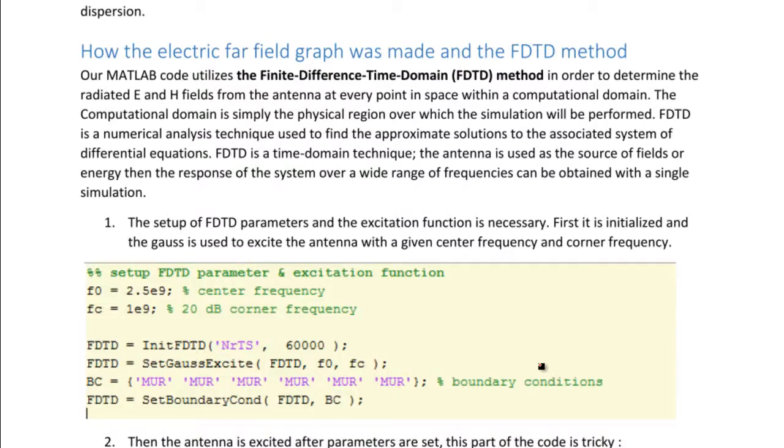I'm going to talk about how the electric far field graph was made and the FDTD method. Our MATLAB code utilizes the Finite Difference Time Domain method in order to determine the radiated E and H fields from the antenna at every point in space within a computational domain. The computational domain is simply the physical region over which the simulation will be performed.